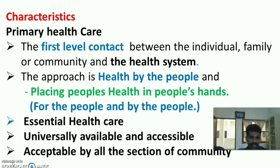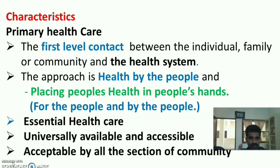The second area is the characteristics of primary health care. First, it is the first level of contact between an individual, family or community to the health system. The health approach is health by the people — for the people and by the people. It is an essential health care, universally available and accessible, and acceptable by all sections of the community through community participation.